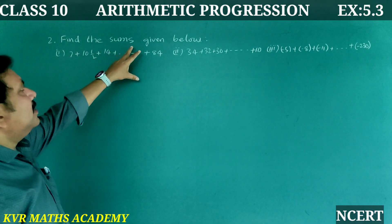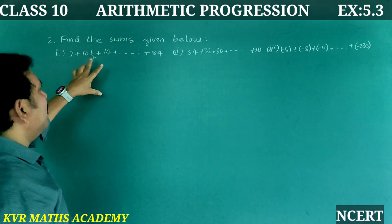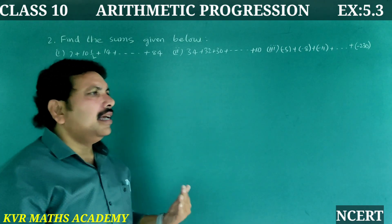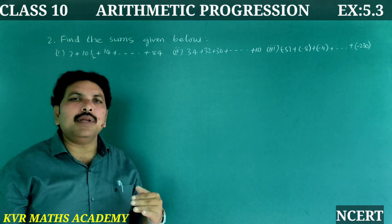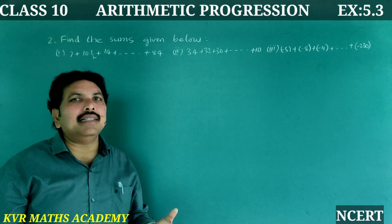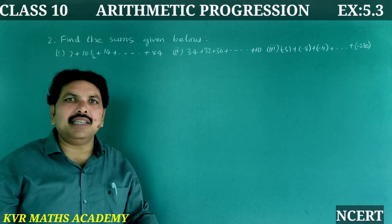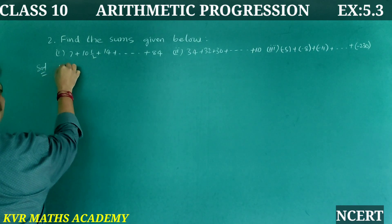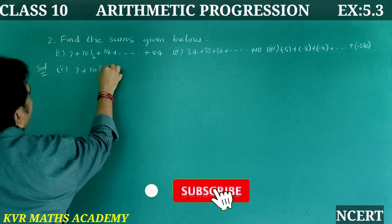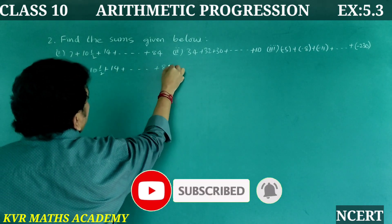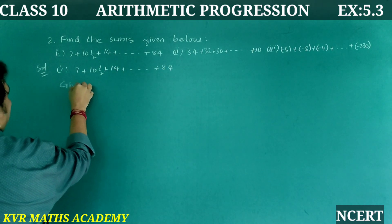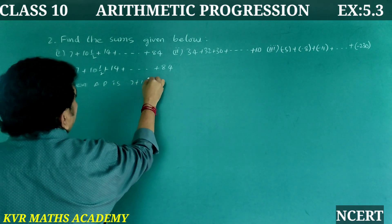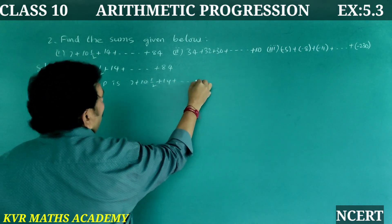Next, find the sums given below — second problem. There are three APs where the last term is given but n is not given directly. We use Sₙ = n/2 × [2a + (n−1)d], and first find n. First AP: 7 + 10½ + 14 + ... + 84.